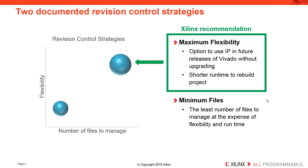It gives you the option to use an IP in a future release of Vovato without upgrading, and you get a shorter run time to rebuild the project because all of the sources do not need to be regenerated every time. If you choose not to use this strategy, there is the alternative documented flow on the minimum number of files that are needed to be checked in. However, be aware that the trade-off is reduced flexibility and additional run time.